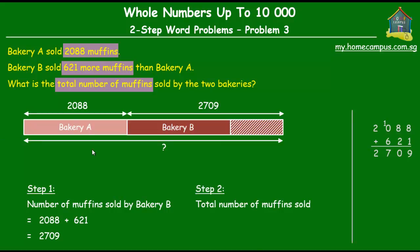Let's find out what that is equal to, and that would give us the total number of muffins sold by the two bakeries. Okay. So 2,088 plus 2,709, let's do the working here on the right of the screen.